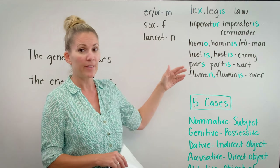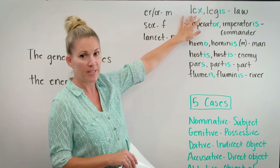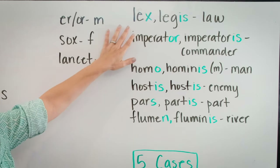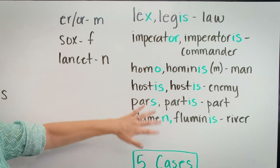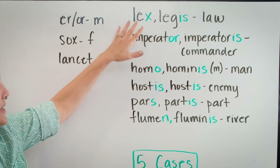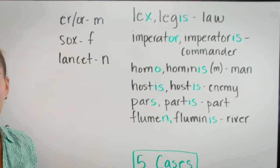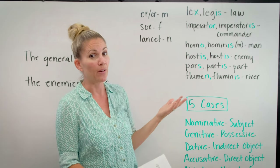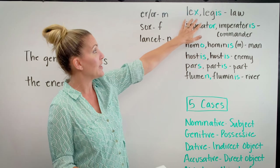Just like the first and second declension, when you see a noun of the third declension listed, you will see two versions: the nominative singular and the genitive singular. If you look at the nominative singular, you might notice that the endings are kind of all over the board — this one ends in an X, this one in an OR, an OIS, etc.